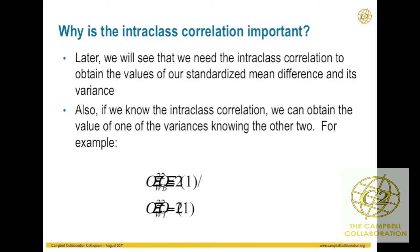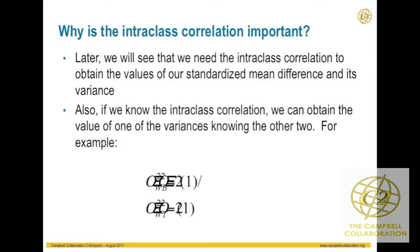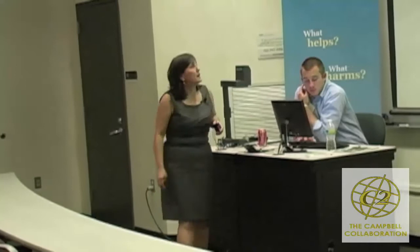Why is the intraclass correlation important? We are going to need it to calculate our clustered effect size. It also helps because the ICC is made up of all those components of variation. So if we have any two of the quantities, we can calculate the third. It's important that we understand this relationship.